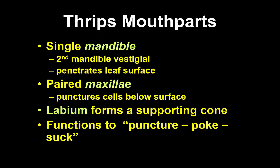The labium is in the form of a cone that is pressed to the surface. So the mandible punctures through the plant, the maxillae break cells releasing cell fluids, and the labium forms a cone that allows them to suck the released fluid up. It kind of functions to puncture, poke, and then suck — puncture with the mandible, poke with the maxillae, and then suck it all up.